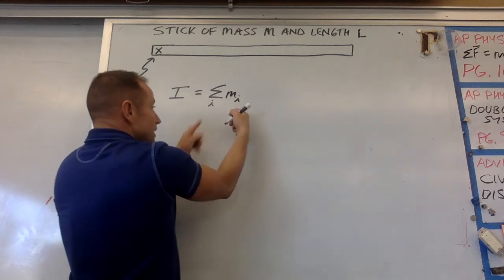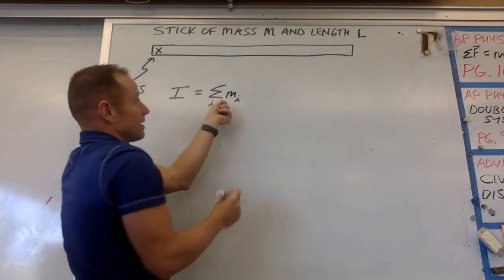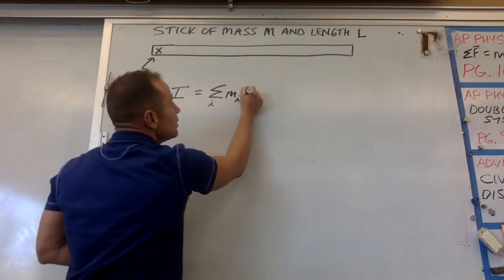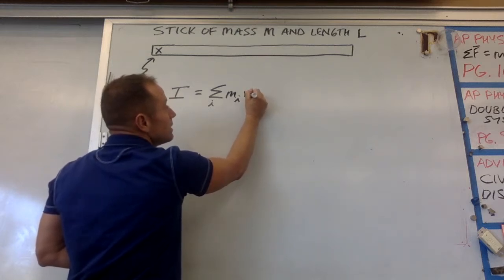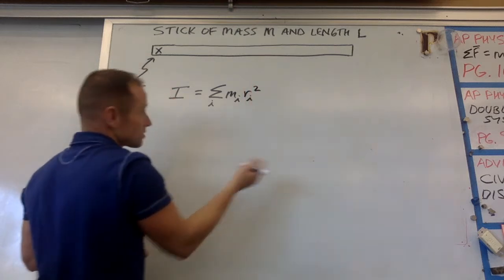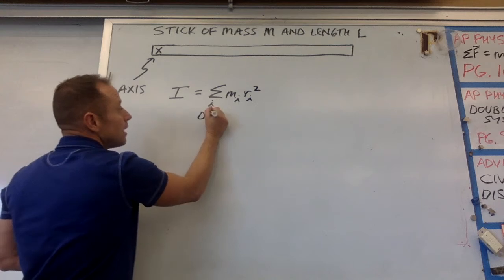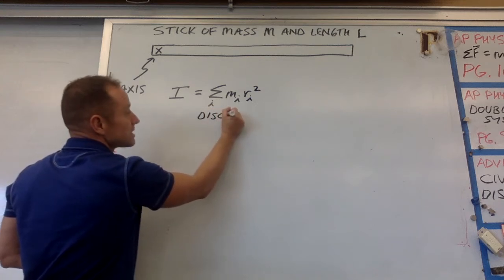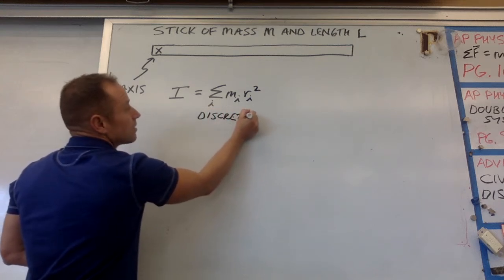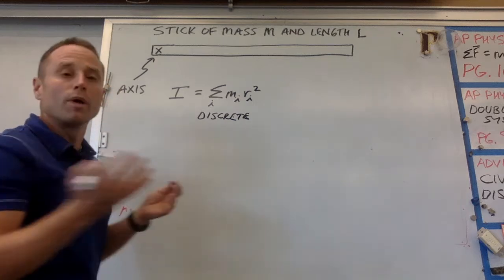So you take each little bit of mass, m sub i, like m1, m2, m3, and you multiply it by its distance away from the axis squared. So this is for discrete masses, like a bunch of separate point masses.